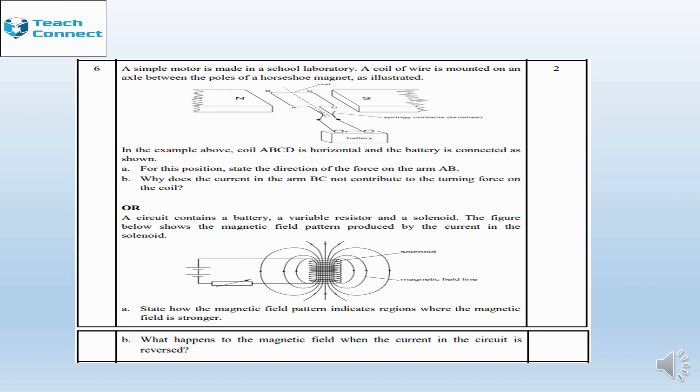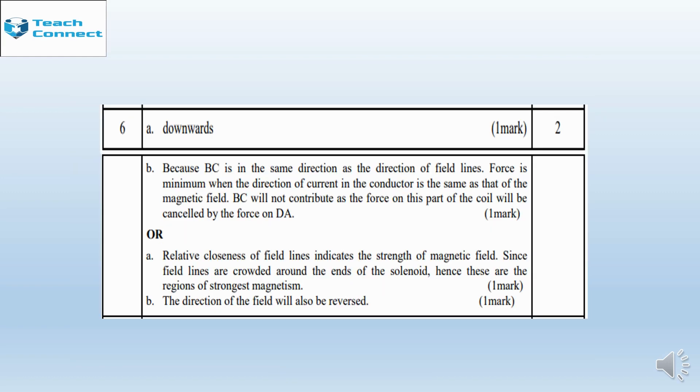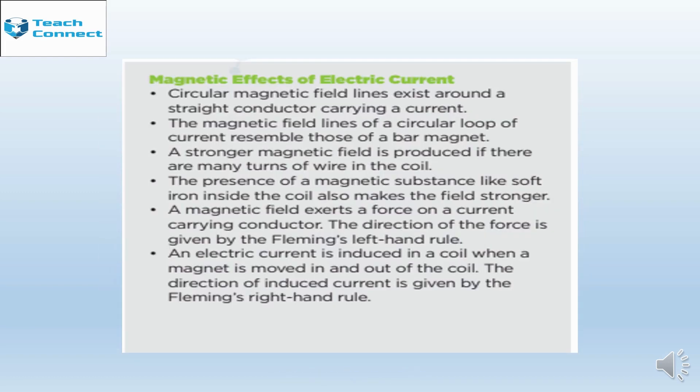The essential concepts Class 10 Science issued by CBSE has its component of magnetic effects of electric current. There are six points under this. Question number six and its alternative cover all the components in the magnetic effects of electric current essential concepts. It discusses the magnetic field around a current carrying conductor, circular loop of current resembling a bar magnet, the strength of magnetic field, and the magnetic field exerting a force on a current carrying conductor.